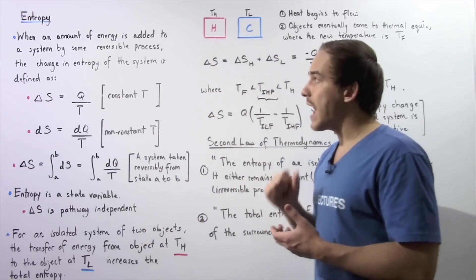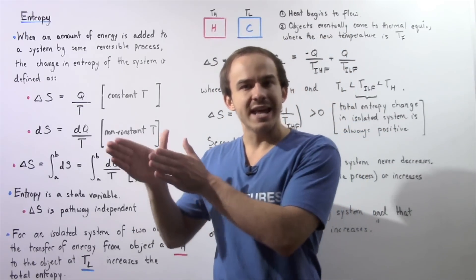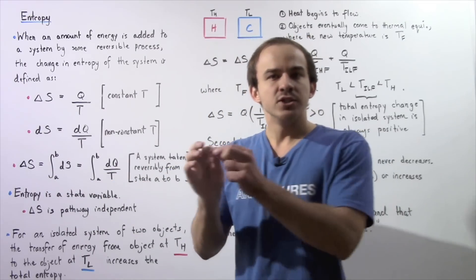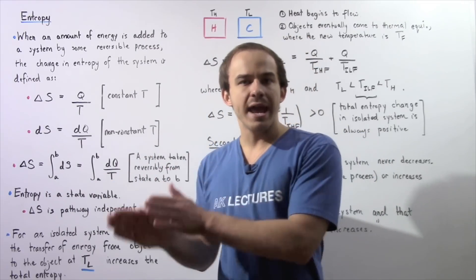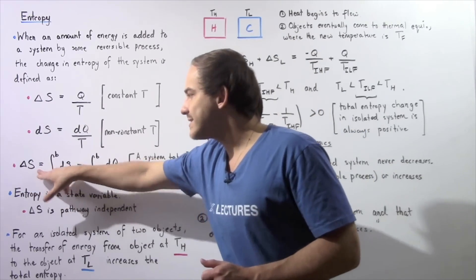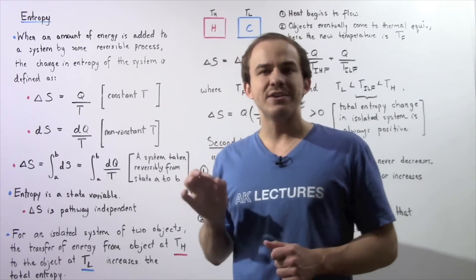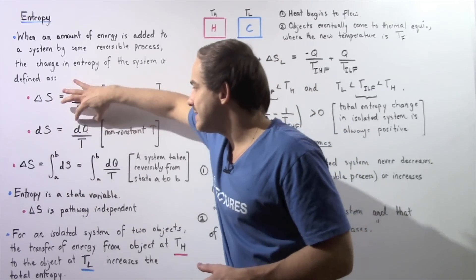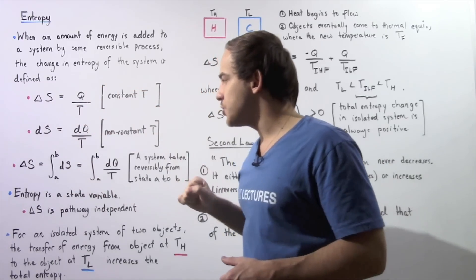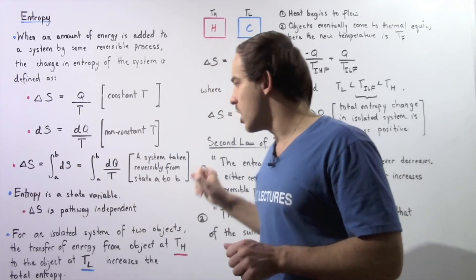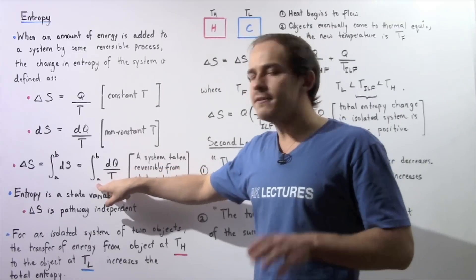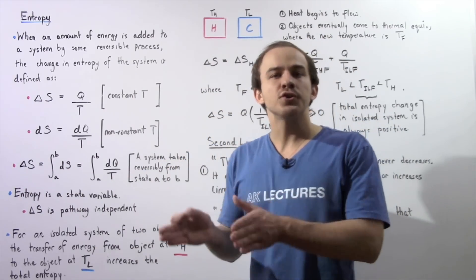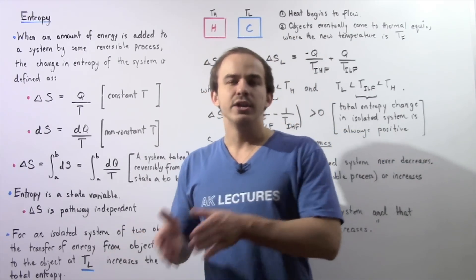Now let's suppose we take our system from an initial state given at A to a final state given at B. We can define the change in entropy during that process as delta S equal to the integral of dS from A to B. Because dS equals dQ over T, we can replace dS with this ratio, and we see that delta S is equal to the integral of dQ divided by T taken from A to B. This is our change in entropy for a system taken by a reversible process from some state A to some state B.